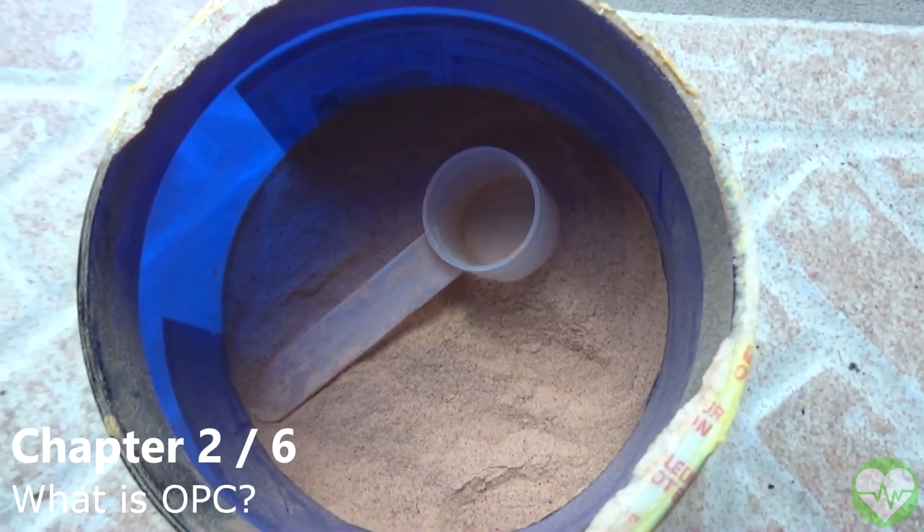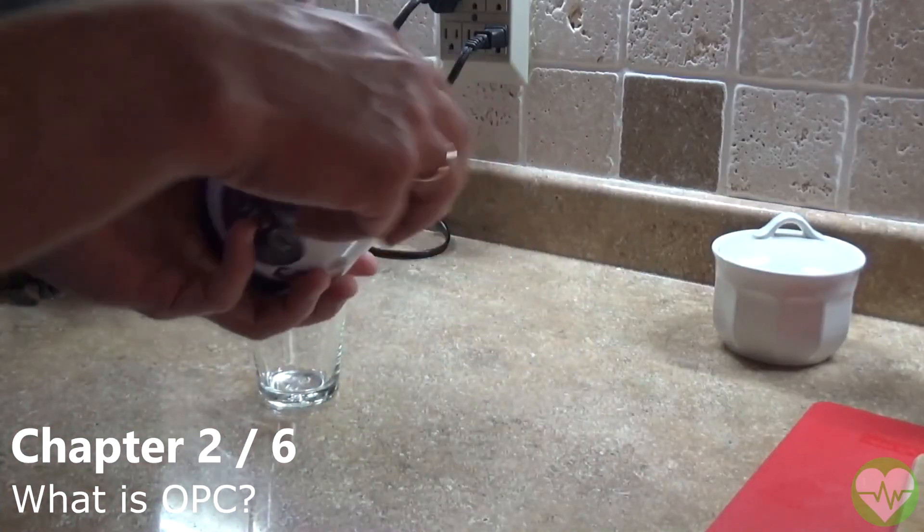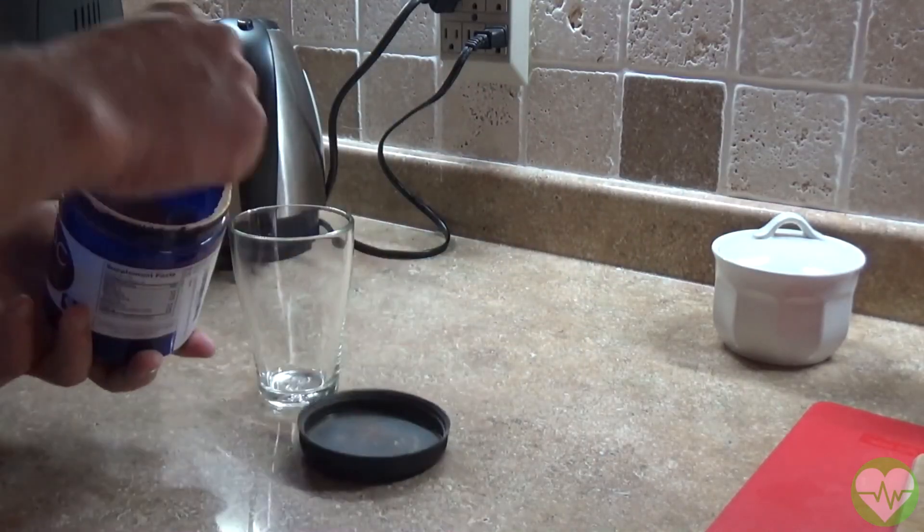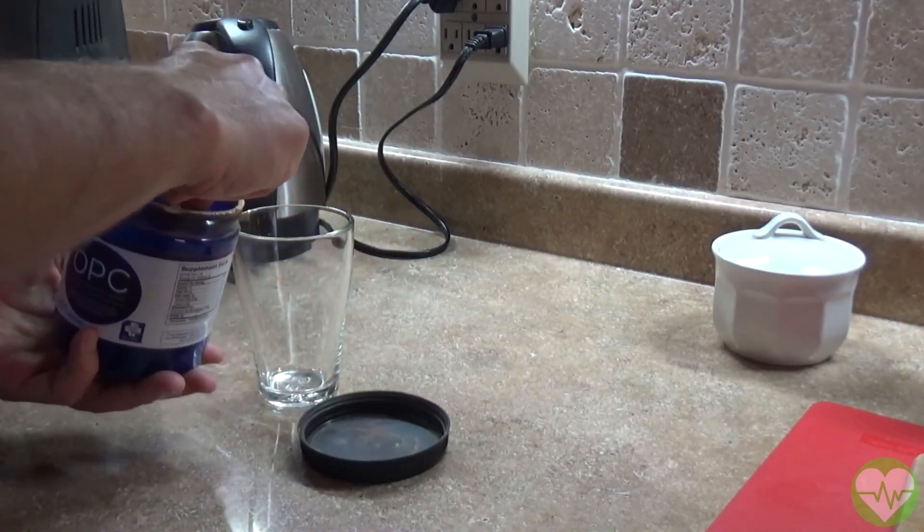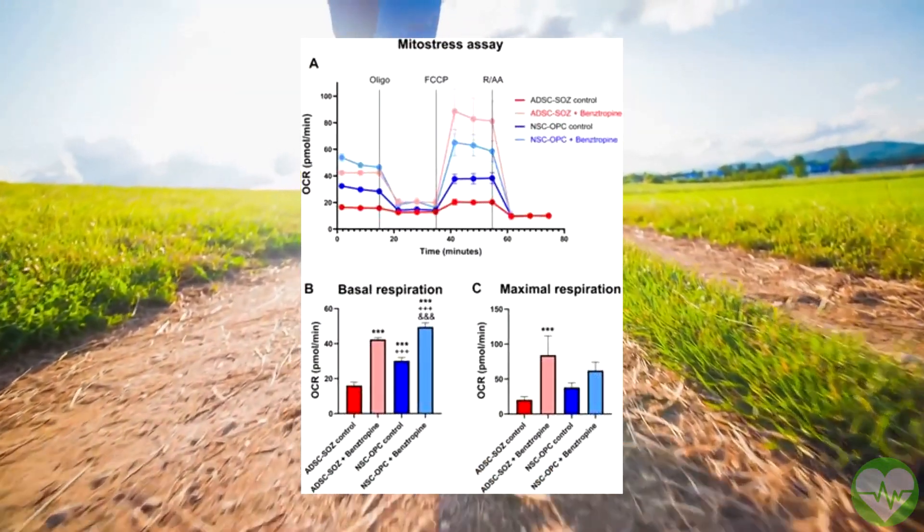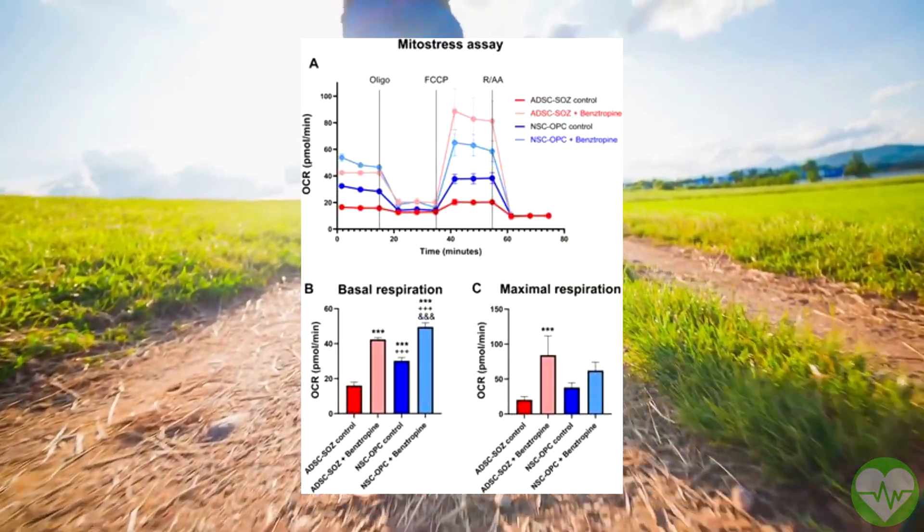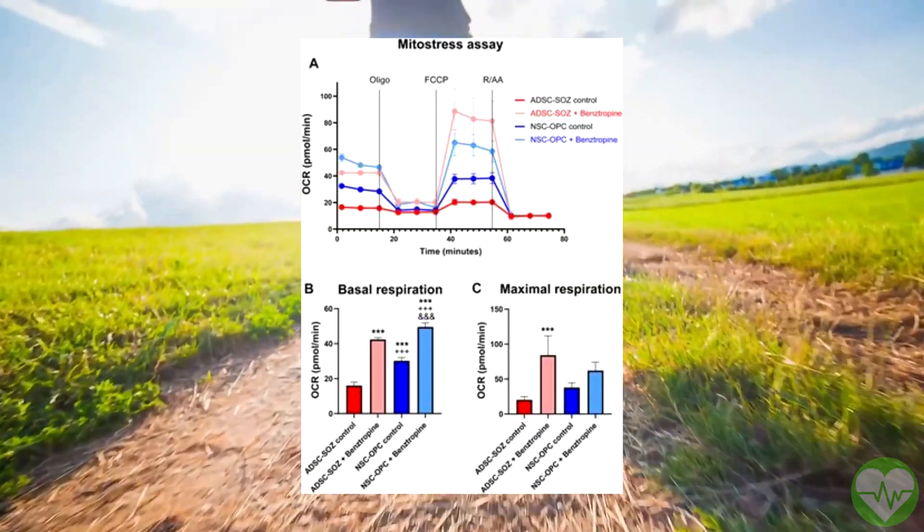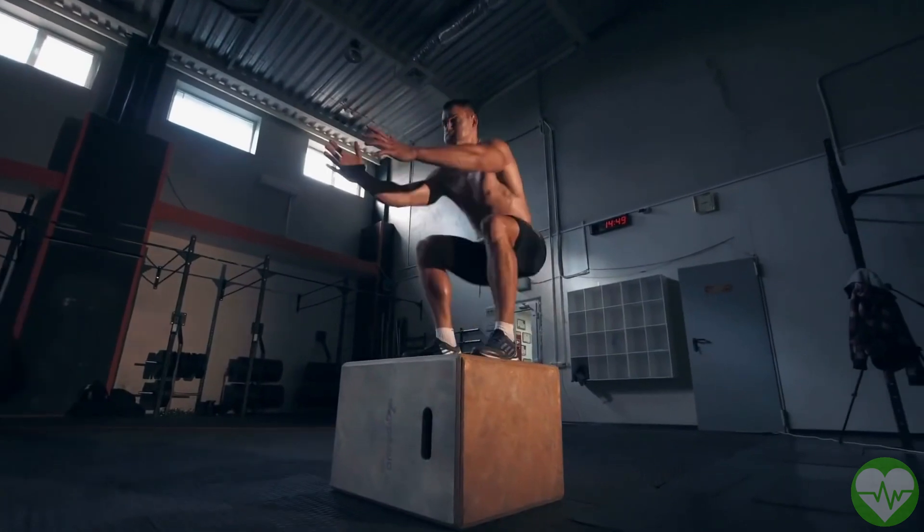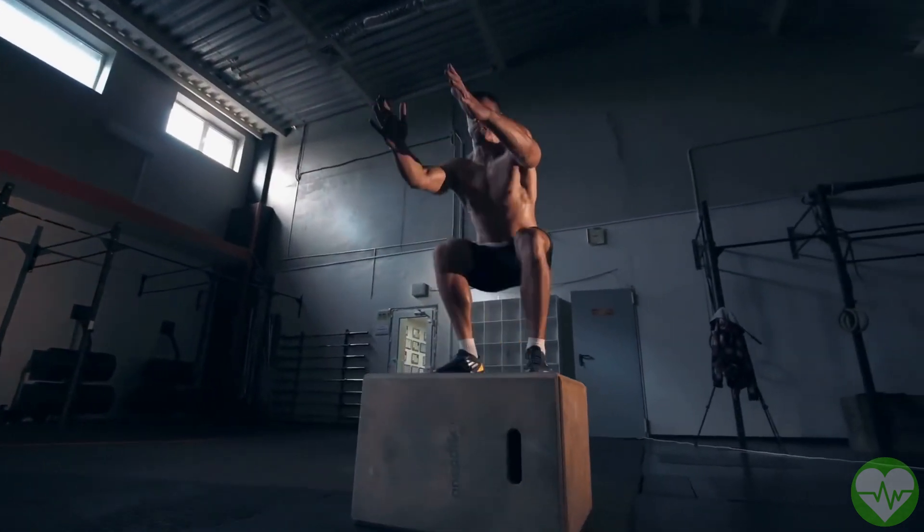OPC refers to a class of plant compounds identified in peanut shells in 1948. They are polyphenols and flavanols with structures that are similar to each other. Plants require OPC to defend themselves against a variety of external threats since they have an antioxidant impact. UV exposure and predators are among the threats.